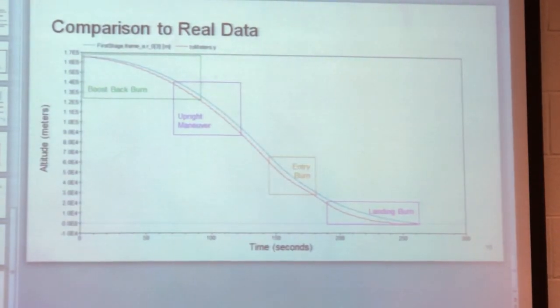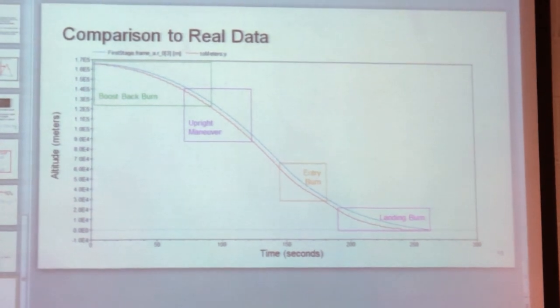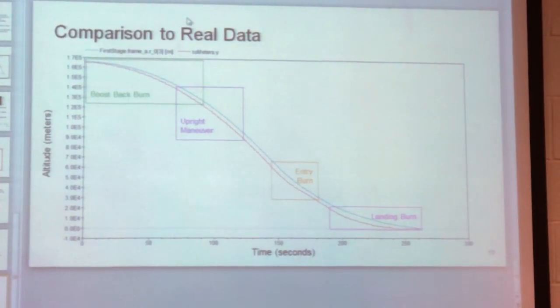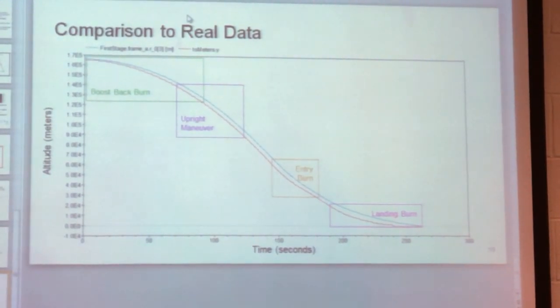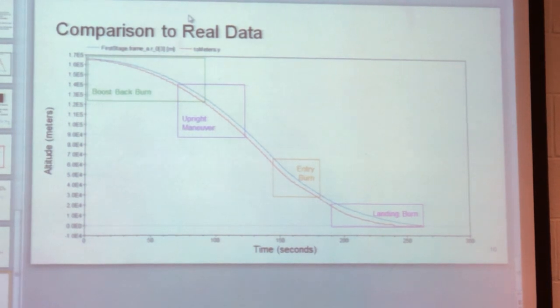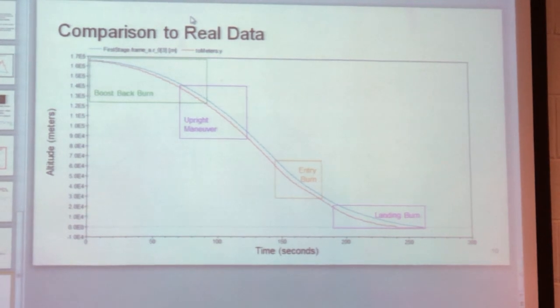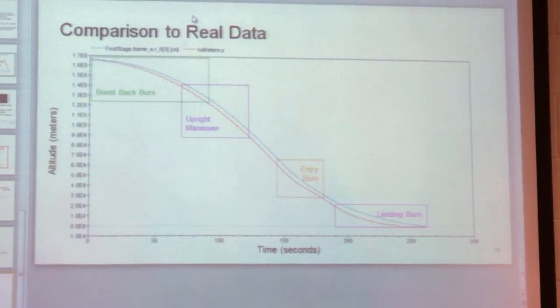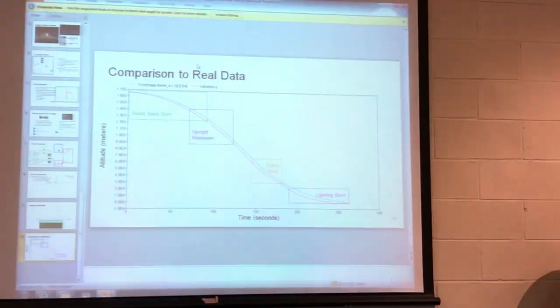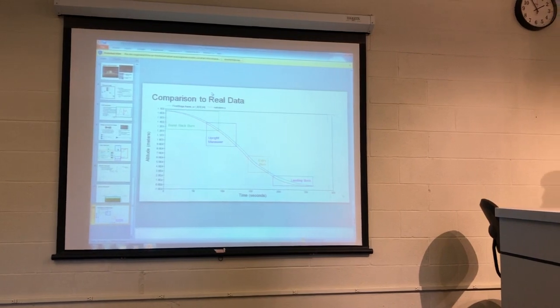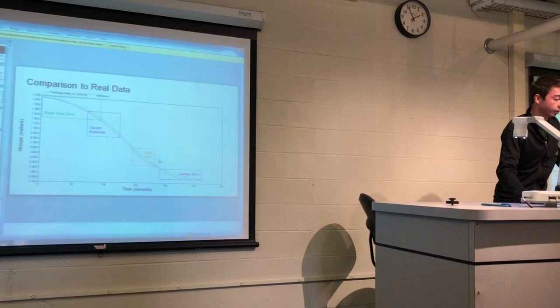And then lastly, I was really trying to compare this to actual SpaceX data. So red is their altitude data as the booster falls back to Earth, and blue is my trajectory. You can see they follow each other pretty closely. And the only difference, I think, is caused by some failures in not modeling the air density correctly.